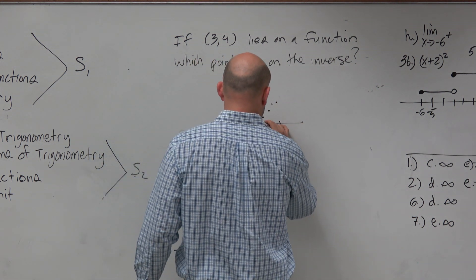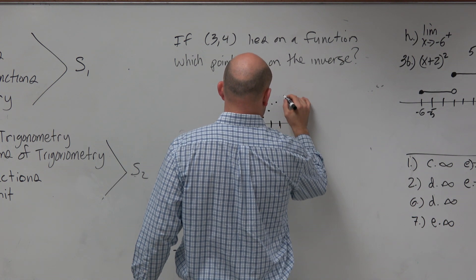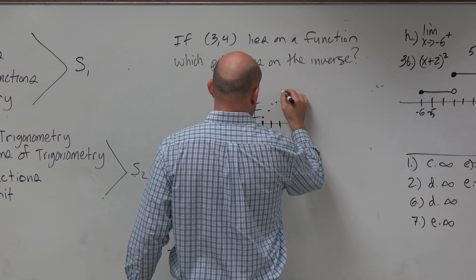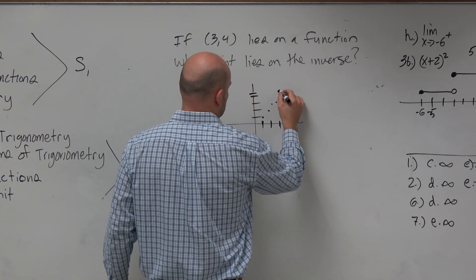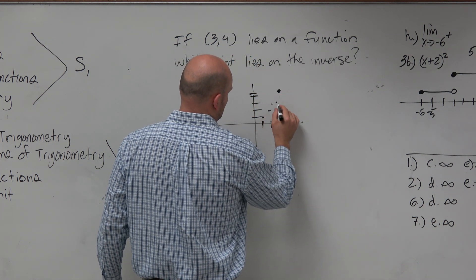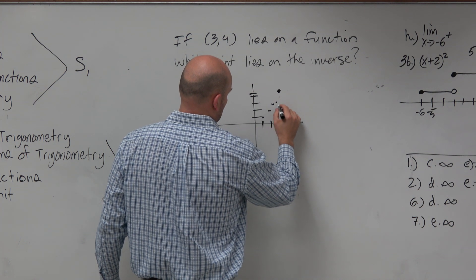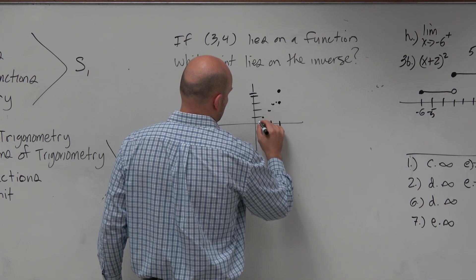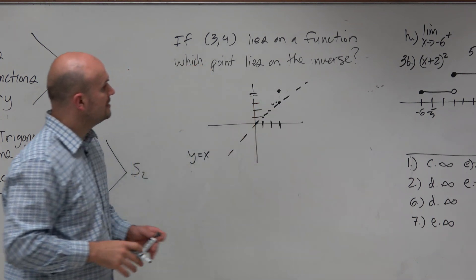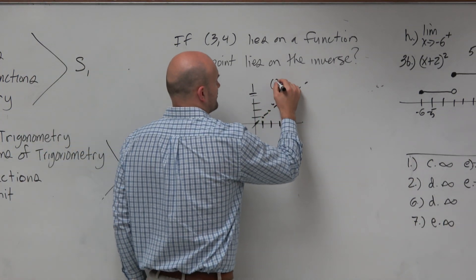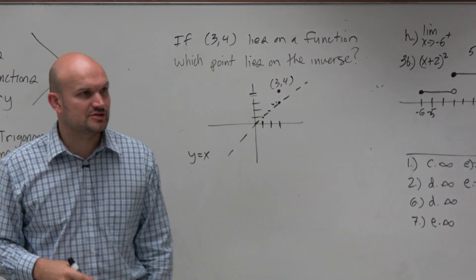So my graph is like bad here. That should be higher. Yeah, it should be higher. It should be up there. 1, 2, 3. There we go. So here is my point, 3 comma 4. And there is my line of symmetry.